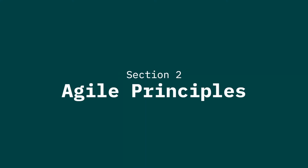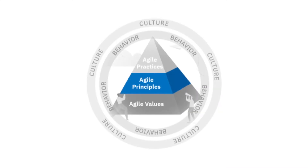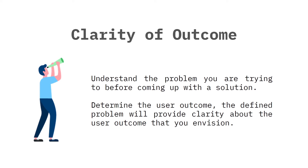In section two of this video, we will explore the Agile principles. Agile principles guide how we do our work. The three Agile principles are clarity of outcome, iteration and learning, and self-directed teams. Clarity of outcome is where you understand the problem you are trying to solve before coming up with a solution. Determine the user outcome — the defined problem will then provide you with clarity about the user outcome you envision.